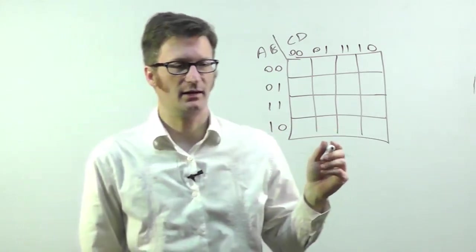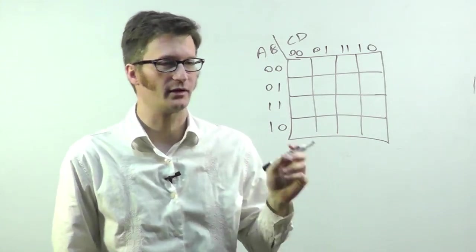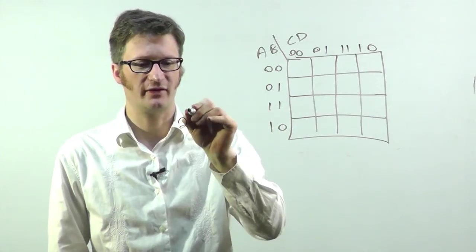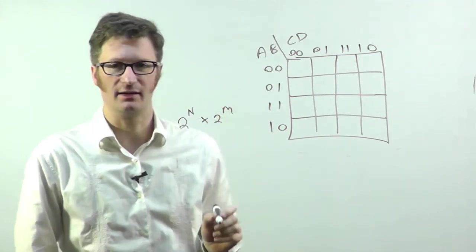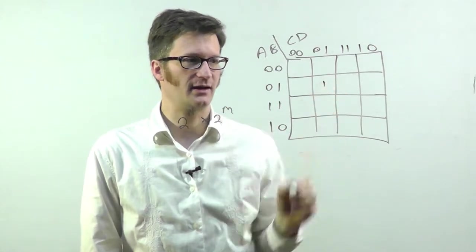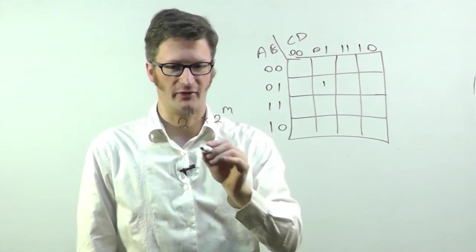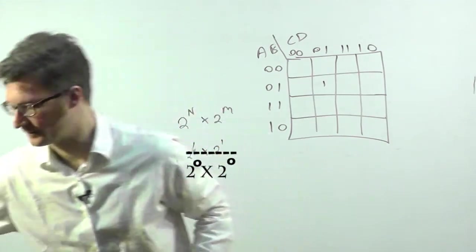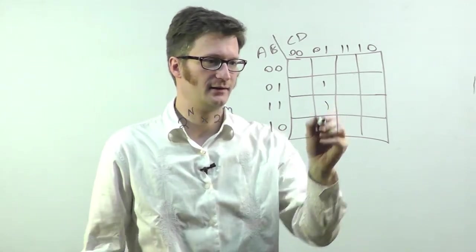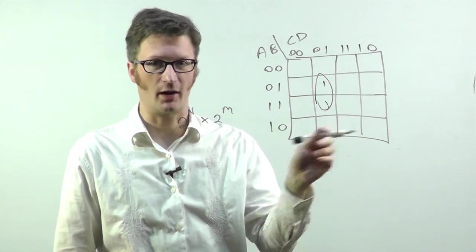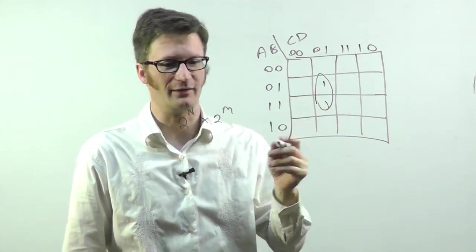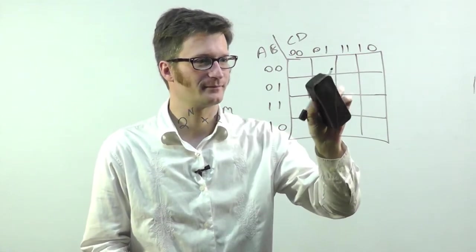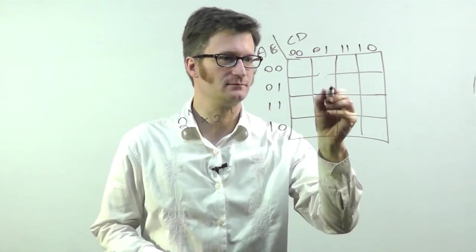The goal of a Karnaugh map is to find groupings of ones or zeros, and I'm just going to stick with ones for this video, but finding groupings of them that are 2 to the n by 2 to the m in dimension. So if I have a grouping of just one, say all these others are zero, this would be 2 to the zero by 2 to the zero. This one's 2 to the zero by 2 to the first tall.